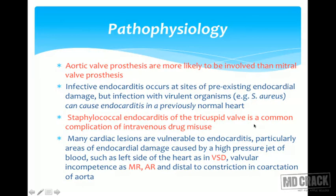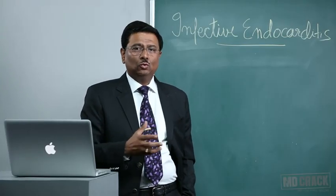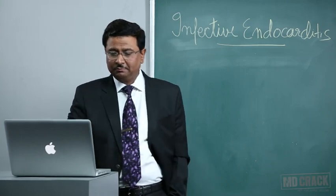Areas of endocardial damage from high-pressure jets include the left side of the heart in VSD, valvular incompetence such as mitral regurgitation or aortic regurgitation, and importantly distal to the constriction in coarctation of the aorta. MCQs have been framed on all of these conditions.